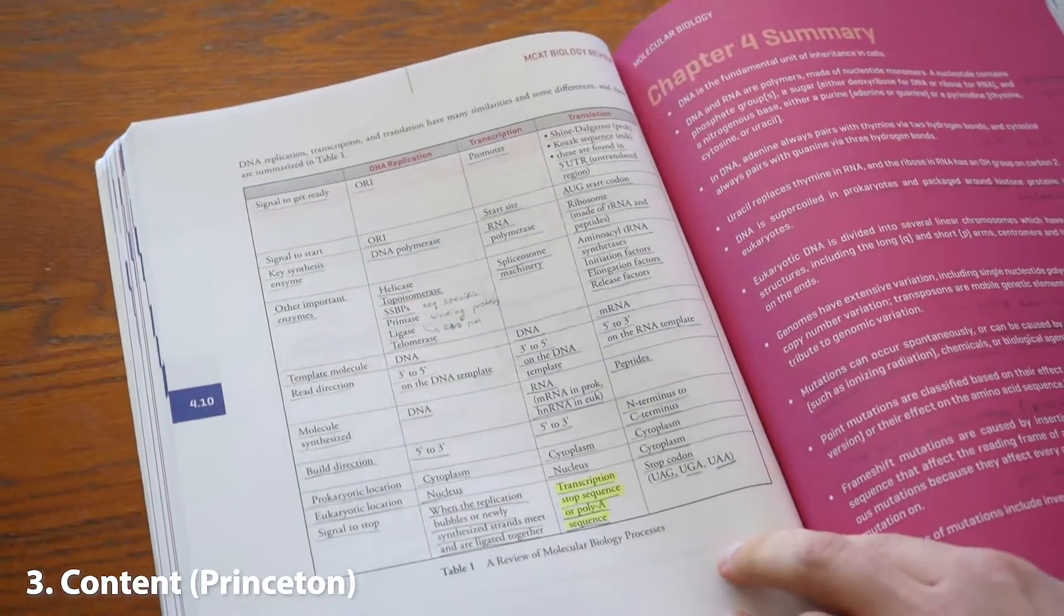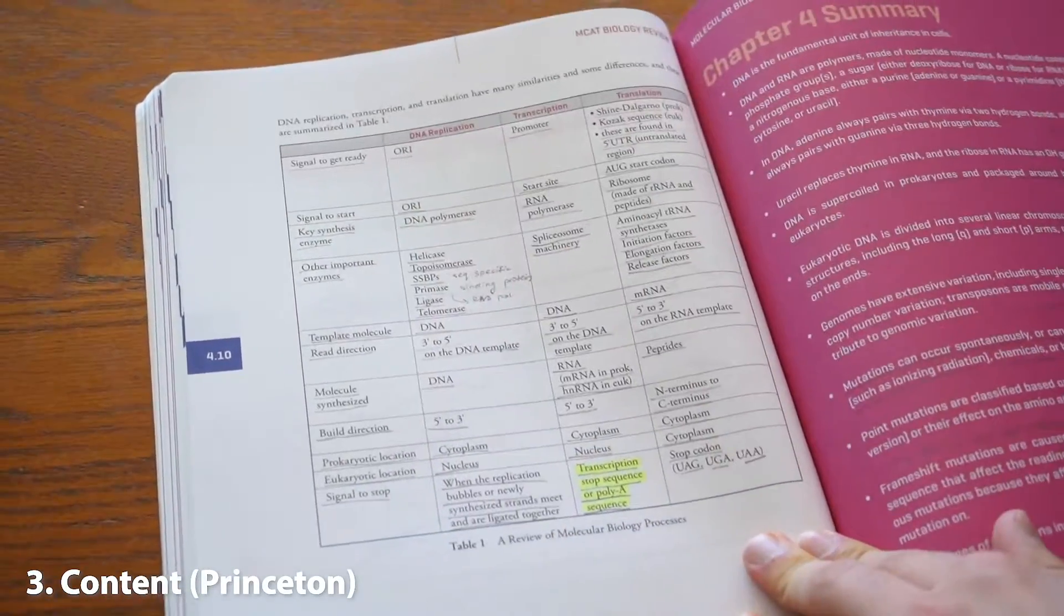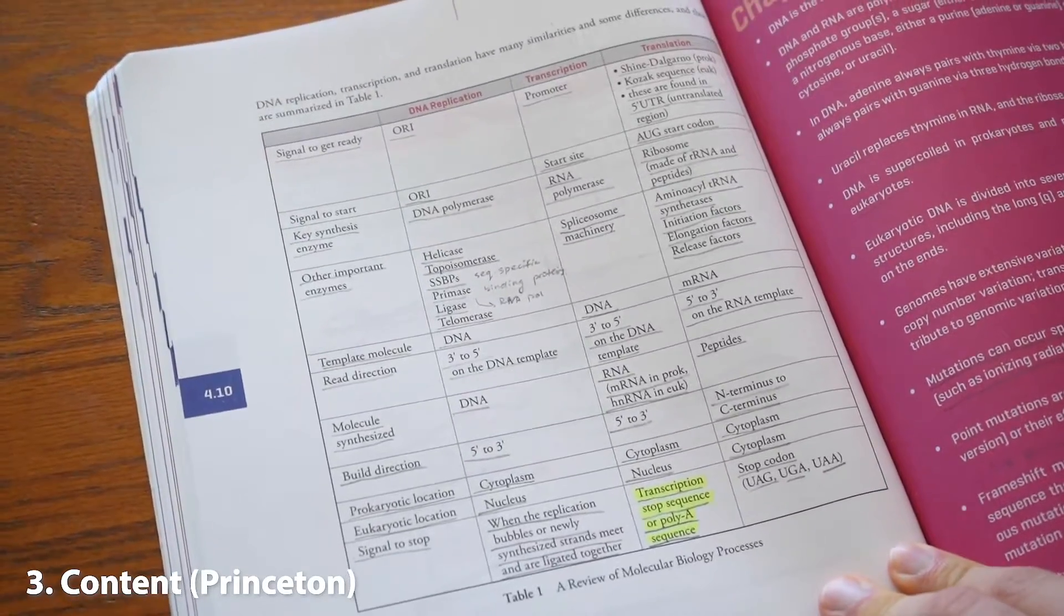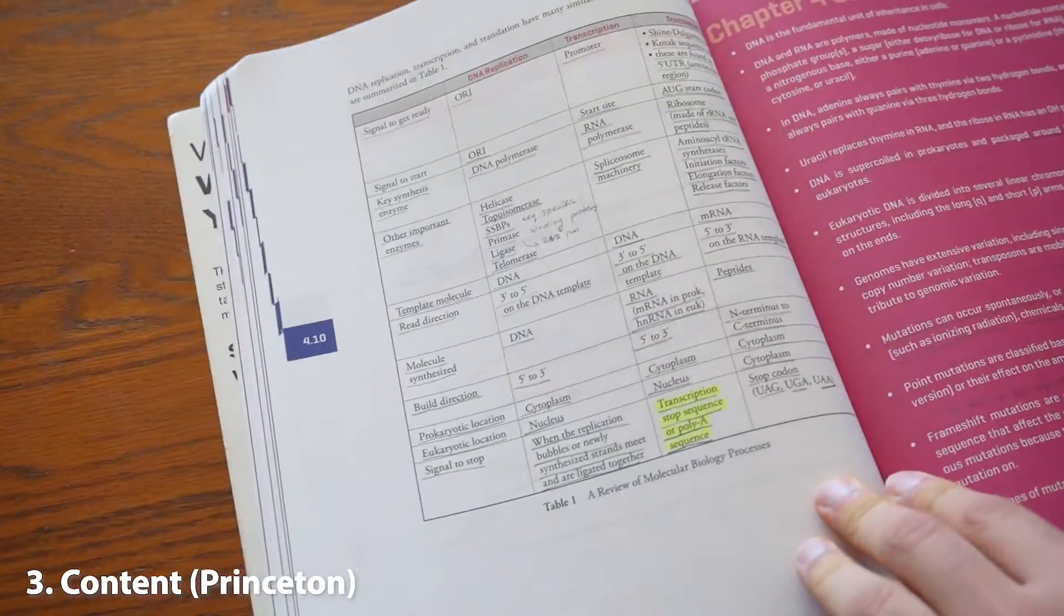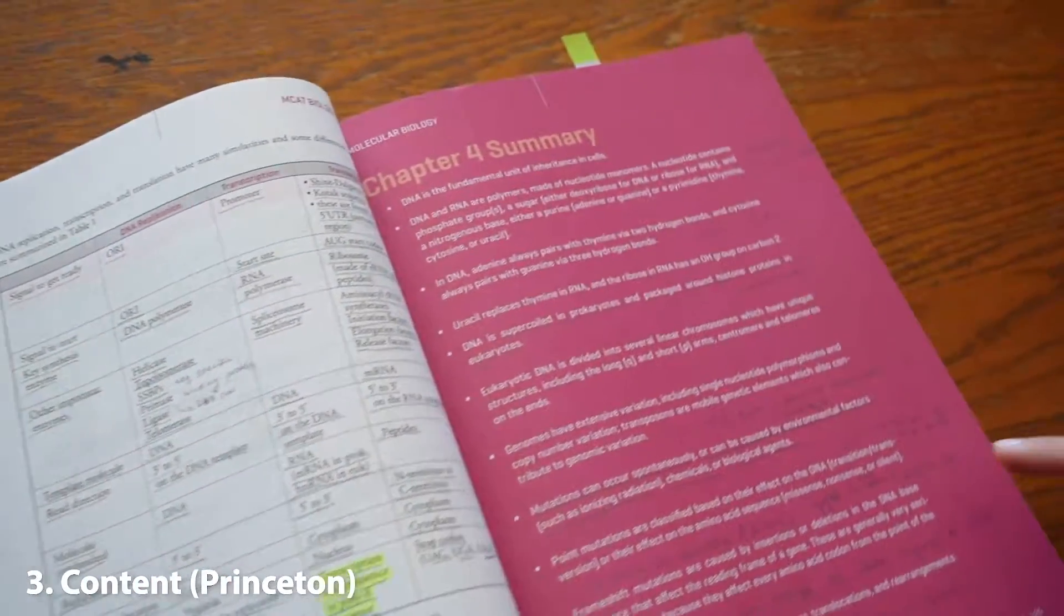So at the end of each chapter, Princeton also gives you a huge table like this one, where they present you with the essential stuff you need to have memorized. They also give you a summary table like this.